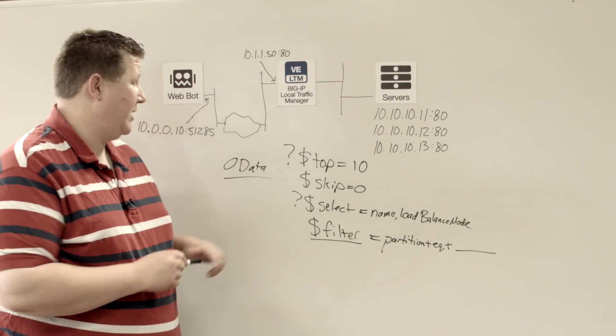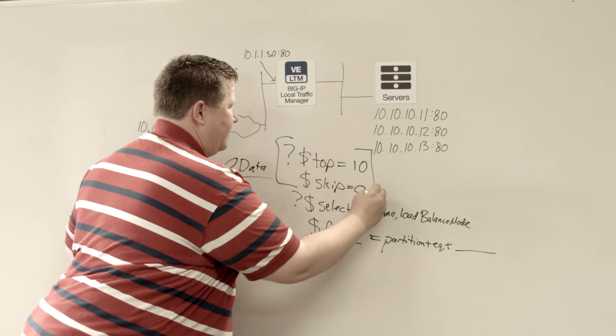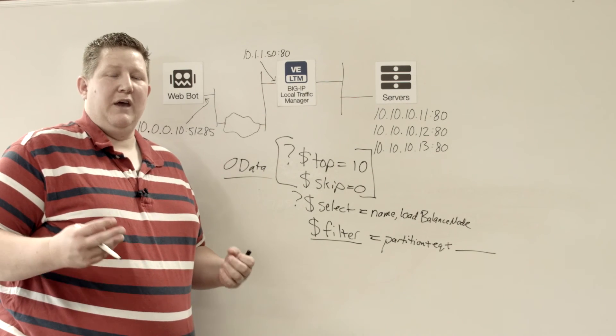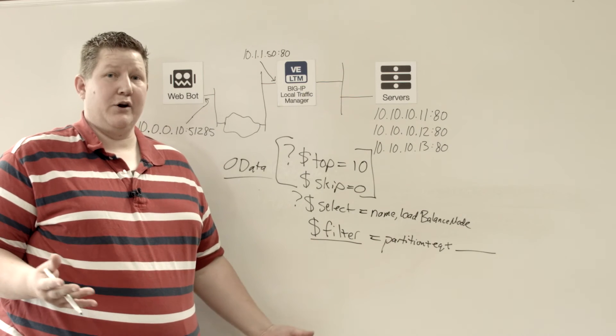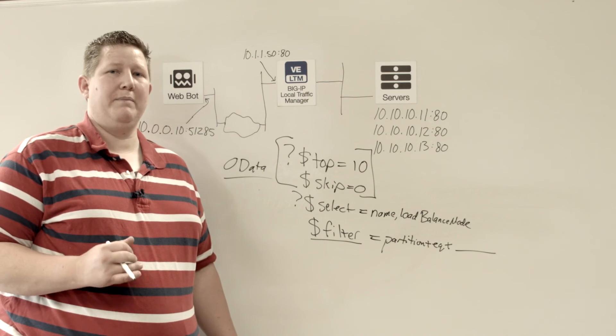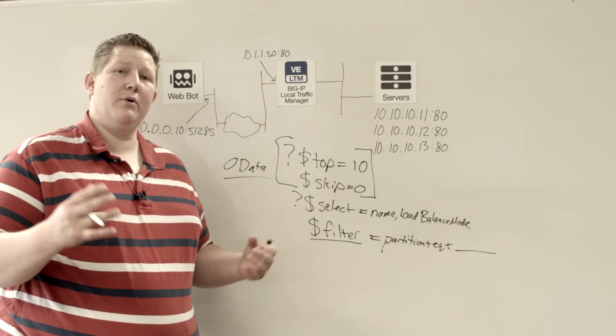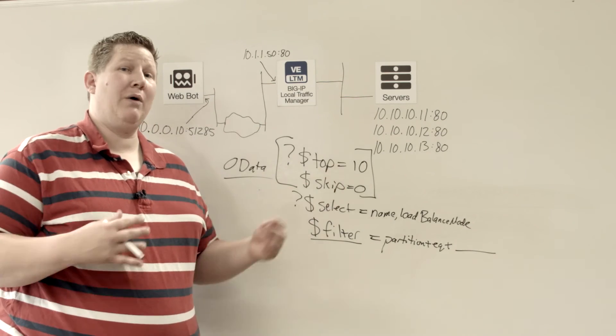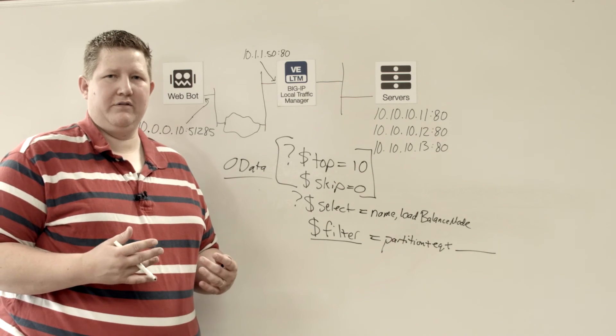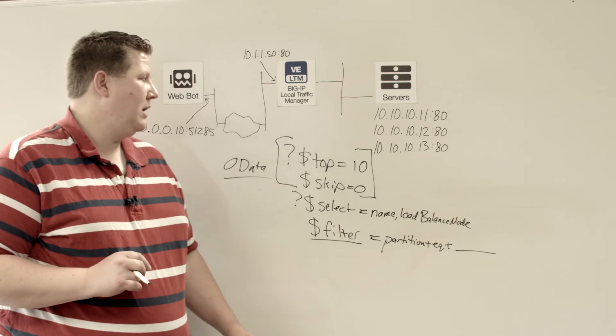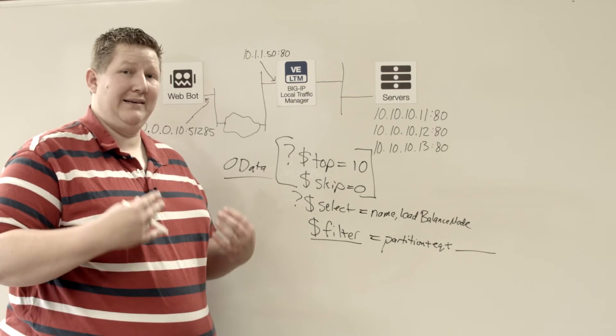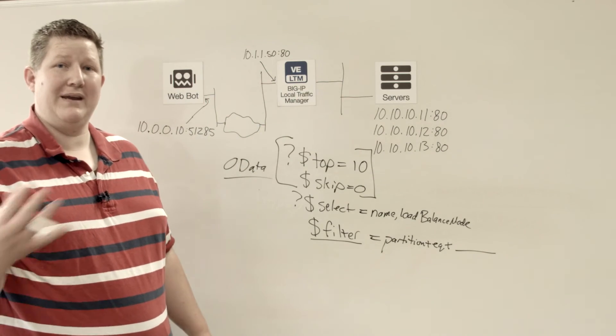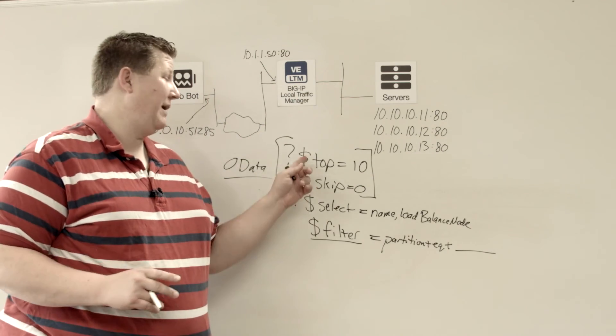One thing I'll note with the pagination, this works on collections and sub collections only. So if you're going to return, say you have 50 data groups defined on your big IP, this will work through each data group. So it'll return your top 10 data groups. It will not work within the data group on the records because that is not a sub collection.